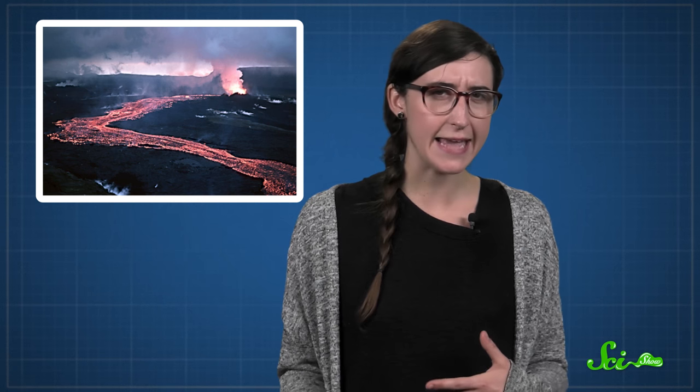During the day, Kawa Ijen's lava looks pretty much like the orangey-red lava of any active volcano. All the sulfuric gases are still burning, but the bright sunlight washes the color out. But at night, sightseers flock to see all of the glowing blue flames on the rivers of molten rock.